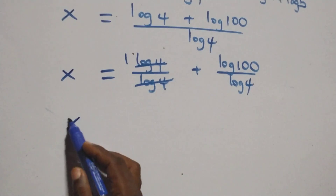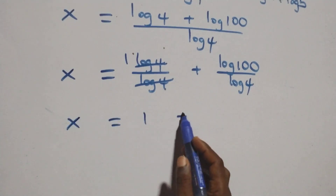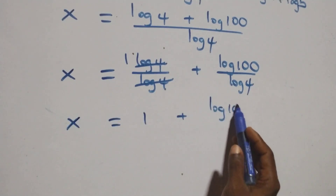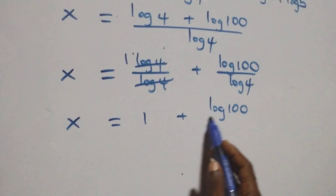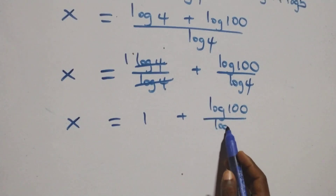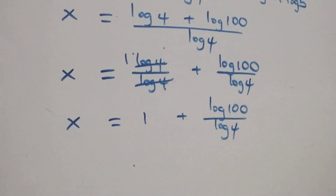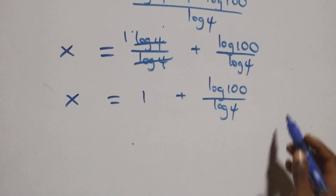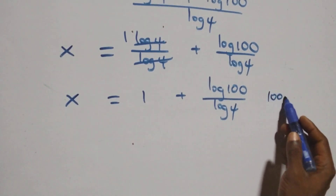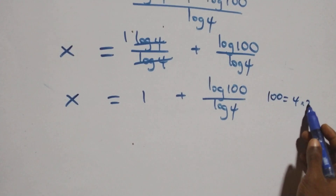This implies x equals 1 plus log 100 over log 4. Next step: now also write 100 as 4 times 25.